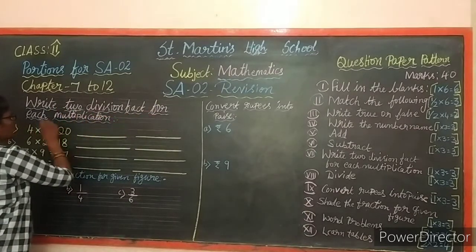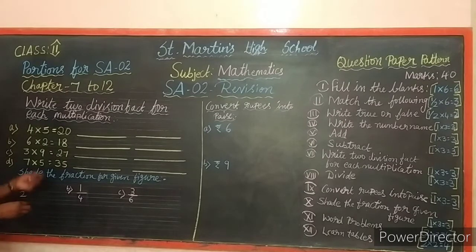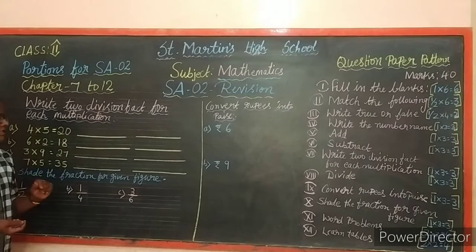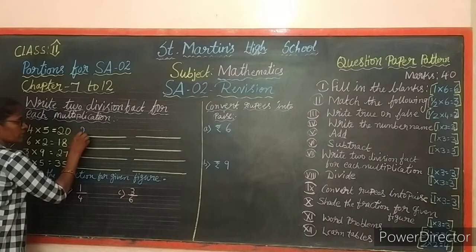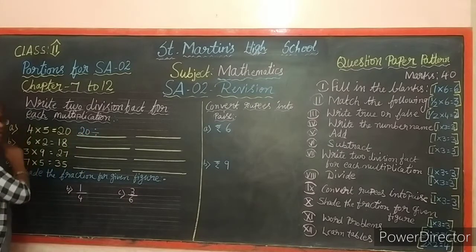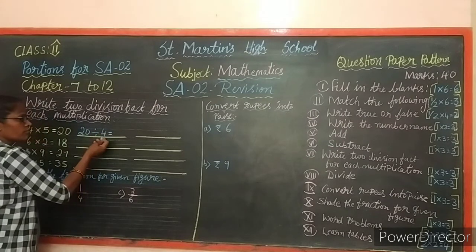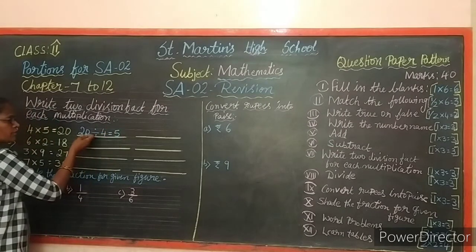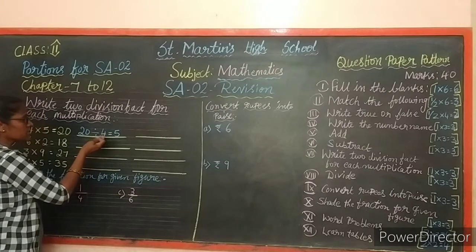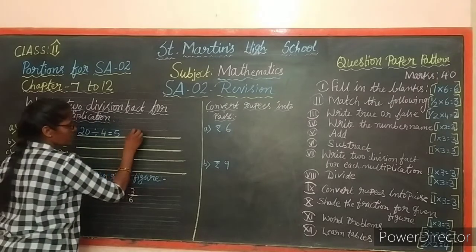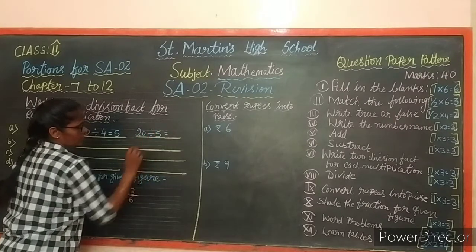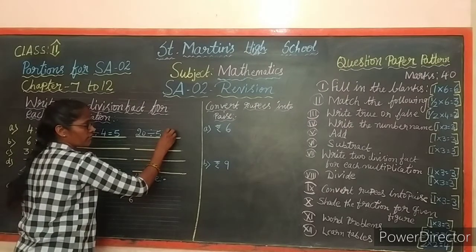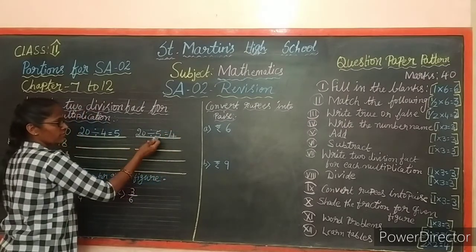Now write 2 division facts for each multiplication. The multiplication is already given. For 4 fives are 20: first division fact is 20 divided by 4 equals 5, because 4 fives are 20. Second division fact is 20 divided by 5 equals 4, because 5 fours are 20.